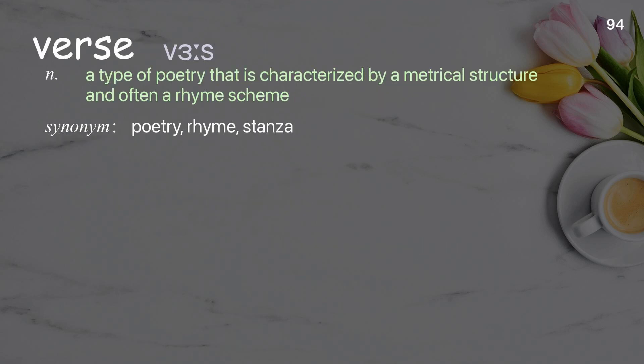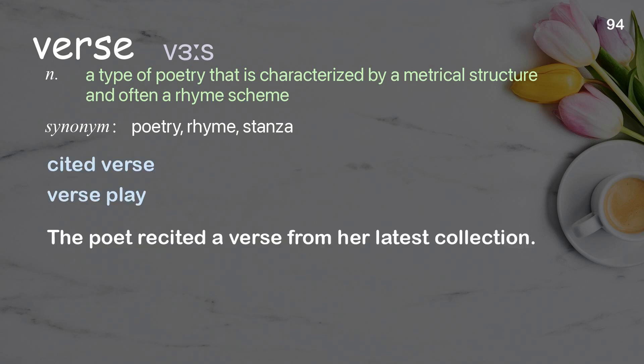Verse: a type of poetry that is characterized by a metrical structure and often a rhyme scheme. Examples: cited verse, verse play. The poet recited a verse from her latest collection.